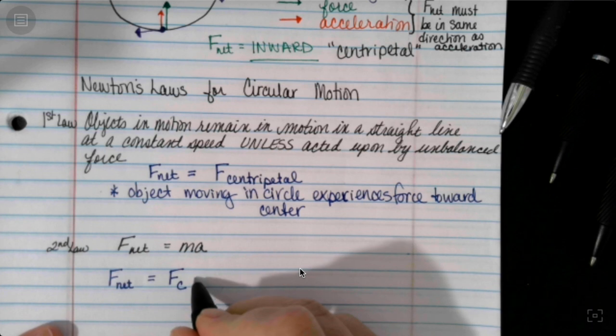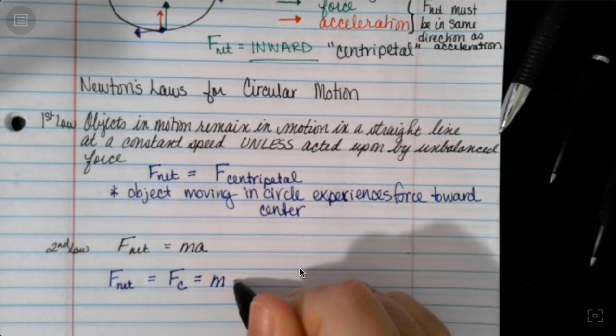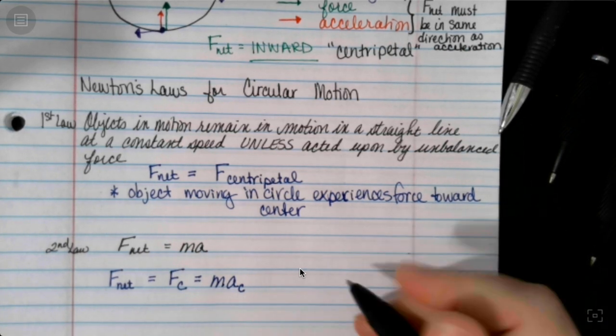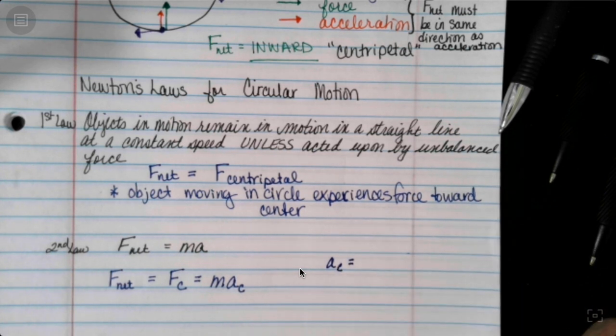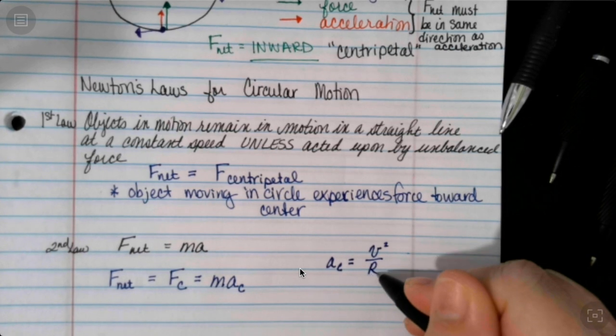And it's not just any acceleration. It's a centripetal or center seeking acceleration. Now, to help with that, we're going to use that the centripetal acceleration is V squared over R.